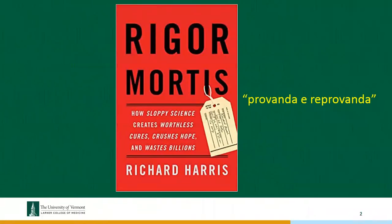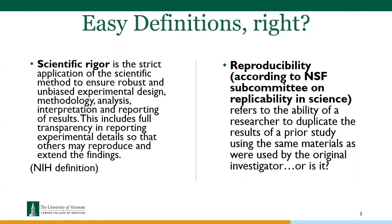So again, this was the book Rigor Mortis. One of the things I really liked in it was something I took away: this provanda e reprovanda. Does anybody know what that means in Italian? Try and try again. Test and retest. And this was from just after Galileo died, around 1642. There was a group of experimentalists in Italy who began publishing their work, and their model was test and test again. I think that certainly holds true to what we're doing today.